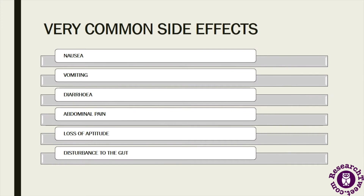The very common side effects are those most often seen when patients first start taking metformin. These problems usually go away over time. Very common side effects include nausea, vomiting, diarrhea, abdominal pain, loss of appetite, gut disturbance, an unpleasant metallic taste, headache, weight loss, and heartburn.